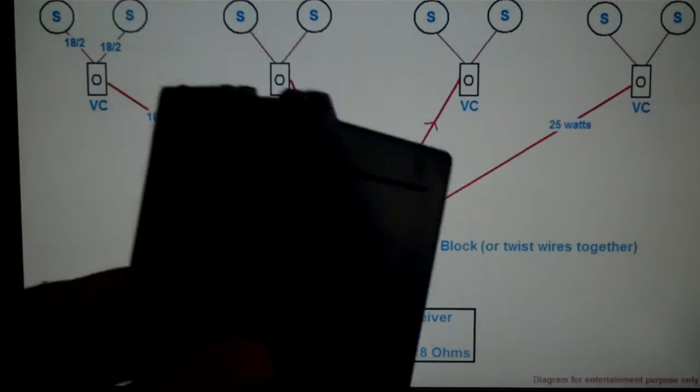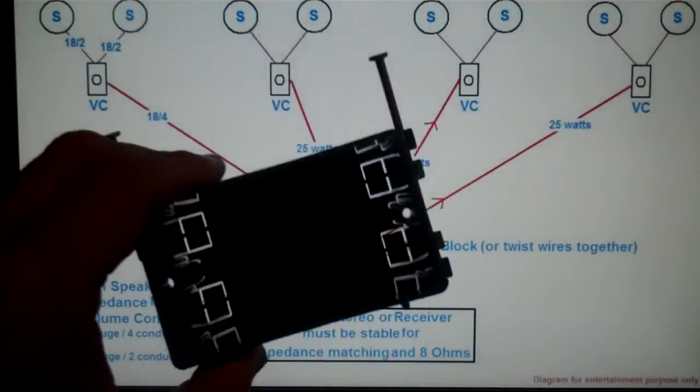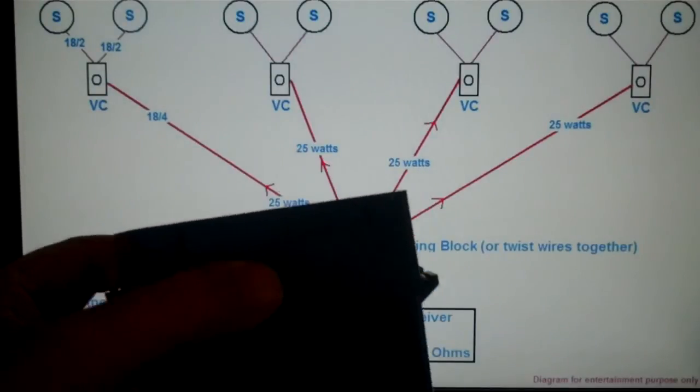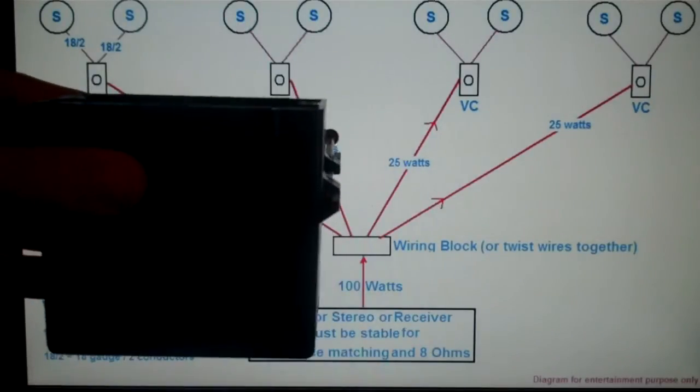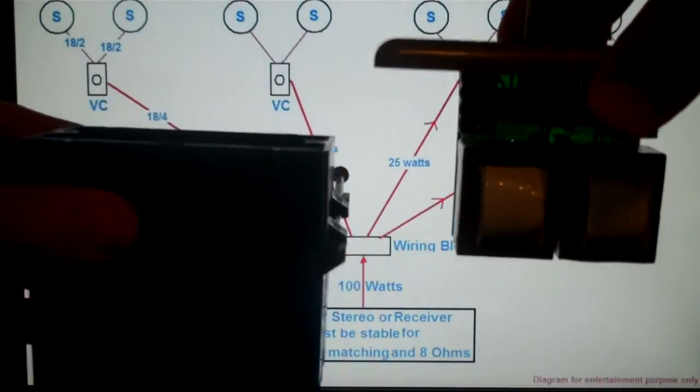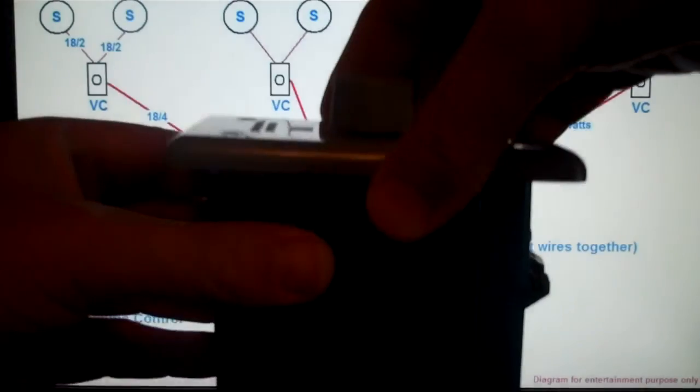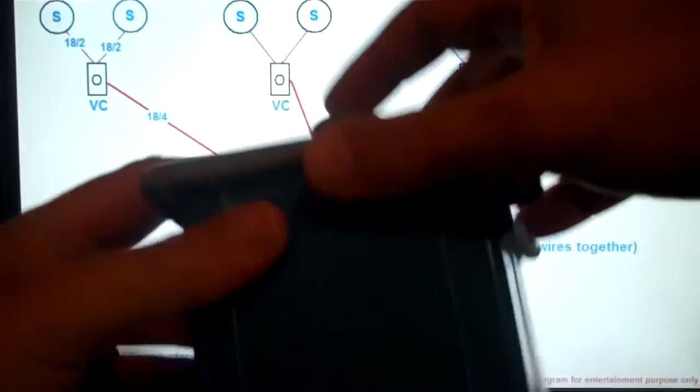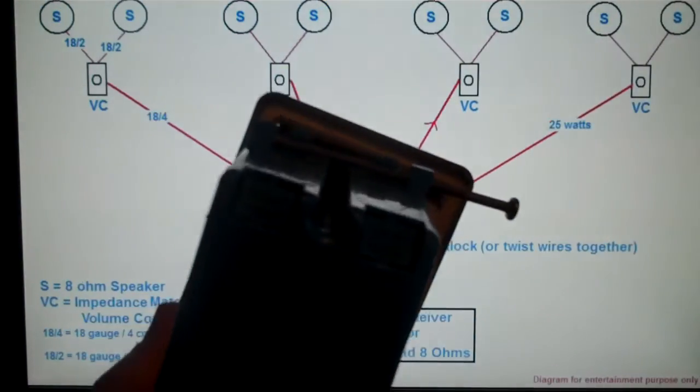And they're designed to go into one of these boxes. Now, if you look at the depth of a box and the depth of the volume control, they're pretty close. So when you install the volume control in a box, there's not a great deal of room left for the wiring.